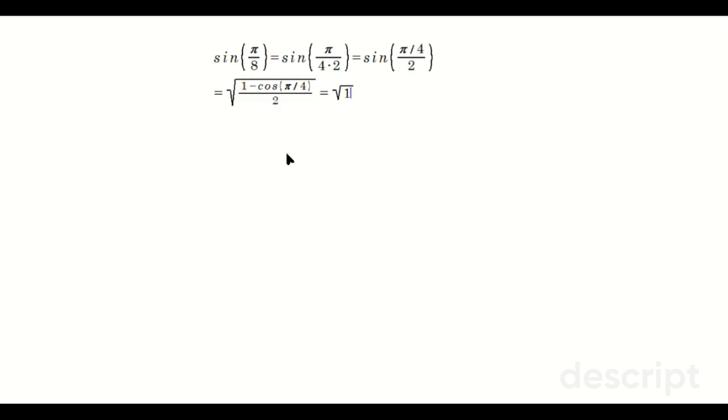And this becomes the square root of 1 minus root of 2 over 2, and then you divide that by the 2 at the bottom. Now usually we don't like to have the 2 at the bottom here, so you can take this and multiply by 2 over 2, because that's equal to 1.